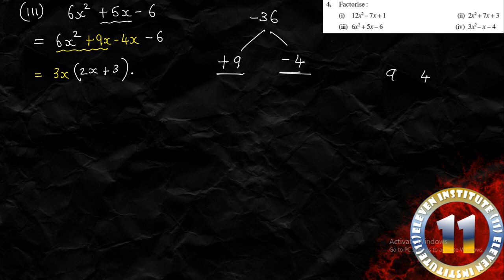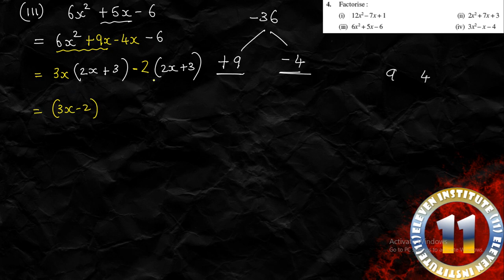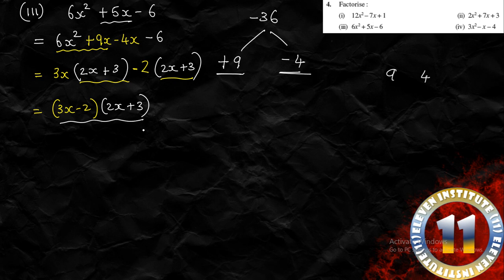The result is (2x + 3)(3x − 2). So the factorization of 6x² + 5x − 6 is (3x − 2)(2x + 3). This is the factorization of polynomials. I hope this is very much clear to you.